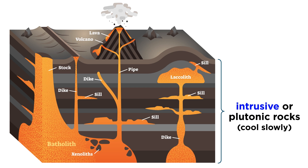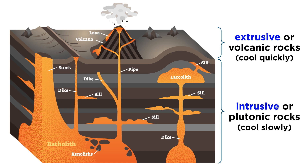Your first step might be determining whether it was extrusive or intrusive. Intrusive describes an igneous rock that cooled slowly at depth, and extrusive describes a rock that cooled quickly at the surface, usually during a volcanic eruption. Intrusive rocks are also called plutonic, and extrusive rocks may be described as volcanic.